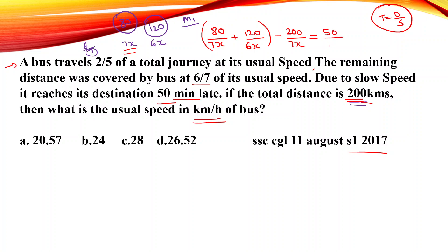We have 50 minutes, which we convert — 50 divided by 60 hours. Now we have the equation. The usual speed corresponds to 7x. Solving the equation: if we set up 8x equals the delay, we can find x and therefore the usual speed.